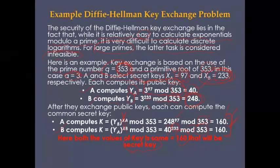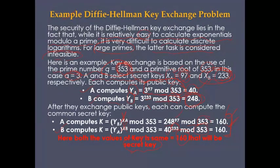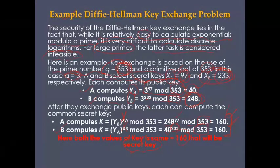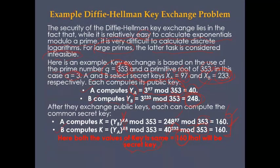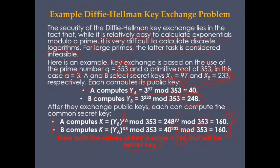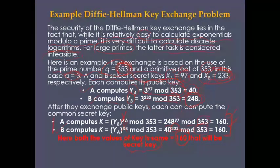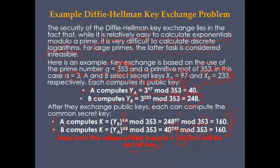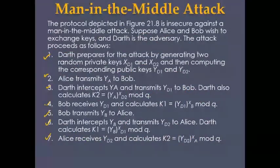Only the public keys are sent from one person to the other — not the private keys. The private key is computed using these calculations. This is why Diffie-Hellman is considered more secure than other key exchange methods.